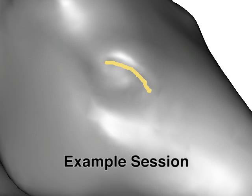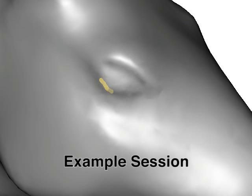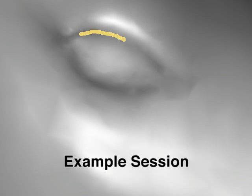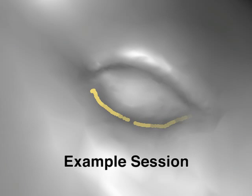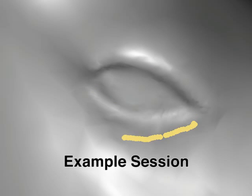We present a system for editing 3D surfaces by drawing 2D shading strokes. In this scenario, the user adds a detailed eye to a horse model.